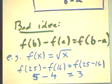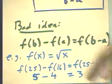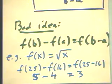Let's take an example. F of X equals the square root of X, just so we see why this doesn't work. Well, F of 25 minus F of 16, if this is true, should equal F of 25 minus 16.